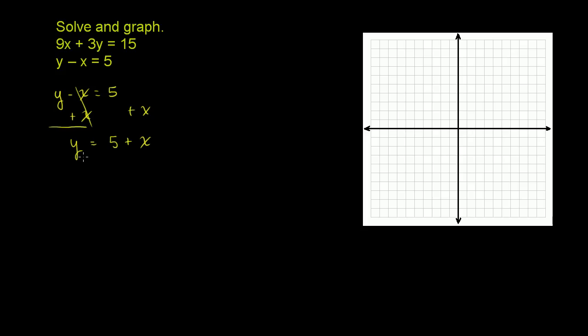Now the whole point of me doing that is now we can, anytime we see a y in the other equation, we can replace it with a 5 plus x. So the other equation was 9x plus 3y is equal to 15. This second equation told us, if we just rearranged it, that y is equal to 5 plus x. So we can replace y in the second equation with 5 plus x. That makes sure we're making use of both constraints.